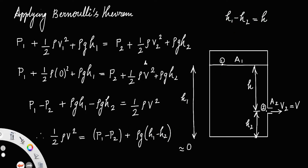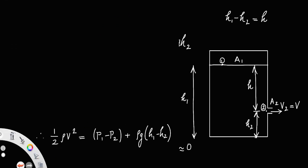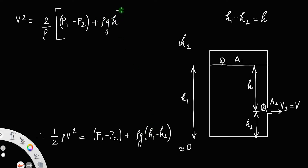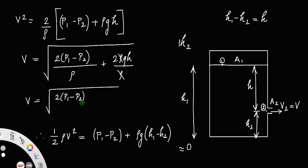Since h1 minus h2 equals h, we have v squared equals (2 / rho) times (p1 minus p2) plus 2gh. Therefore, v equals the square root of [2(p1 minus p2) / rho plus 2gh].